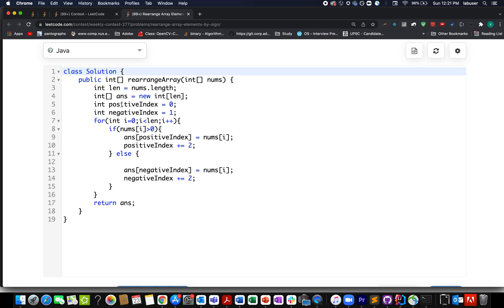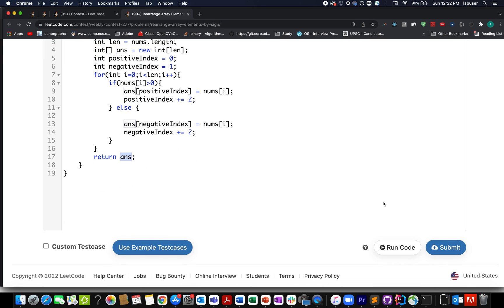So here I have taken the 3 pointers. The first one for iterating over the array. Next one is the positive index and the third one is the negative index. So I have also built my answer array like this. And let's start the iteration. If my element happens to be positive in nature, I make an insertion at the positive index and increment the positive index by 2. Similarly, if my element happens to be negative in nature, I make an insertion at the negative index and increment the negative index by 2. In the end, I simply return my answer array. So let's try this up.